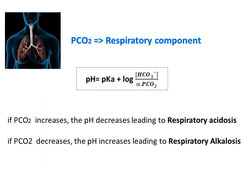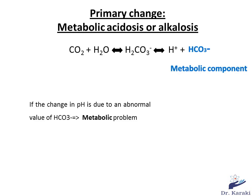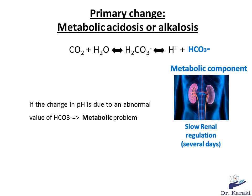If the primary problem that drops the pH is elevated CO2, we call it respiratory acidosis. If pCO2 decreases and drives the pH up, the primary change is called respiratory alkalosis. The other component of the Henderson-Hasselbalch equation is bicarbonate — known as the metabolic component, regulated by the kidneys. This is a slow regulation that takes several days. If the change in pH is due to abnormal bicarbonate values, it is called a metabolic problem.